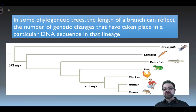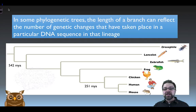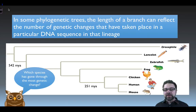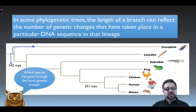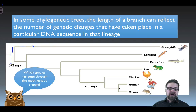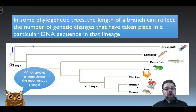One noteworthy thing about phylogenetic trees is that the length of a branch can reflect the number of genetic changes that may have taken place in a particular DNA sequence in that lineage. For example, the Drosophila — our common fruit fly — shows not a whole lot of change from 542 million years ago. The rest of the species from lancelet to mouse went through a number of DNA changes. By the time we get to human and mouse, we can imagine they have gone through the most genetic change.